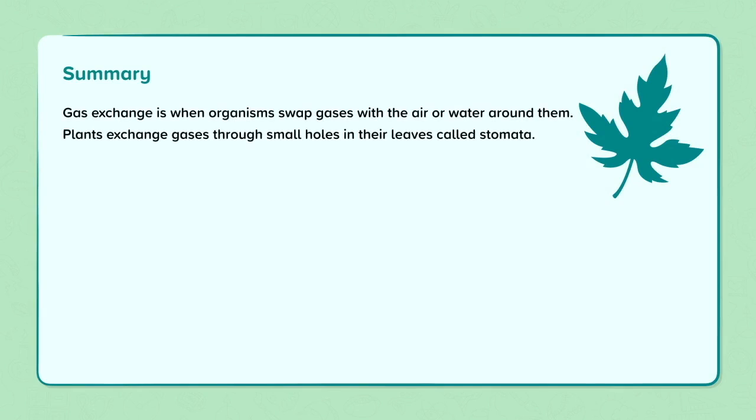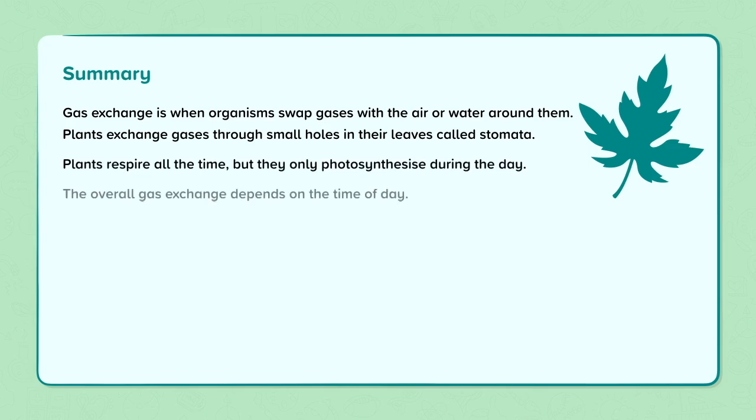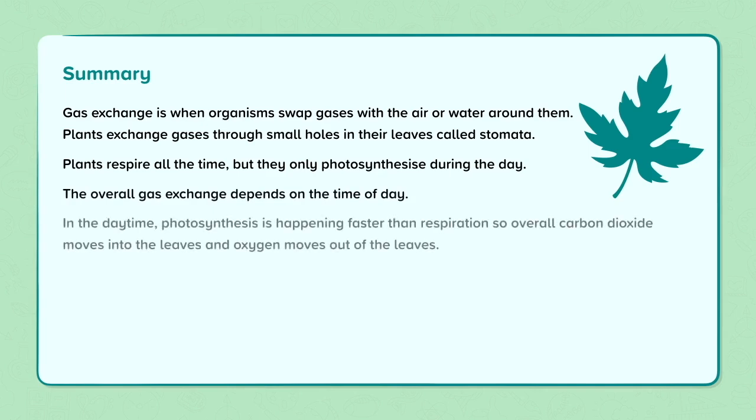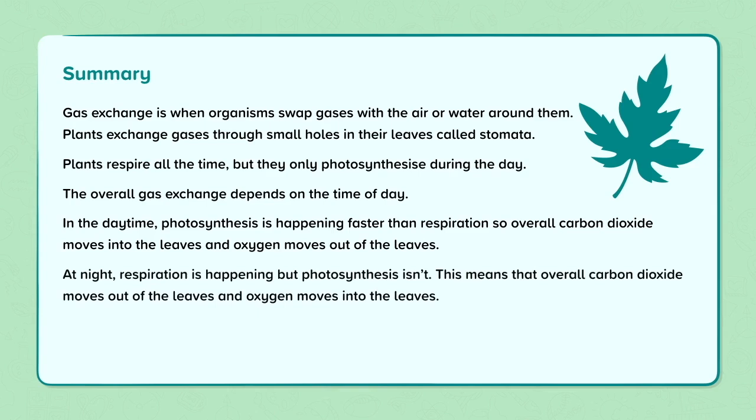To summarize, gas exchange is when organisms swap gases with the air or water around them. Plants exchange gases through small holes in their leaves called stomata. Plants respire all the time, but they only photosynthesize during the day. The overall gas exchange depends on the time of day. In the daytime, photosynthesis is happening faster than respiration, so overall carbon dioxide moves into the leaves and oxygen moves out of the leaves. At night, respiration is happening, but photosynthesis isn't. This means that overall, carbon dioxide moves out of the leaves and oxygen moves into the leaves.